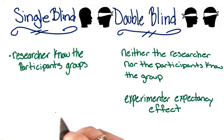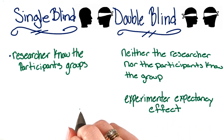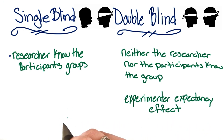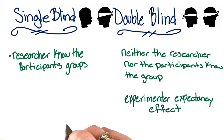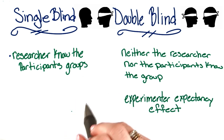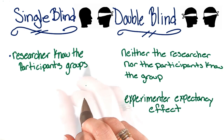For example, let's say instead of looking at caffeine's effect on reaction time, we want to look at the effects of kindness. Maybe I, as a researcher, believe that caffeine does make people more friendly.